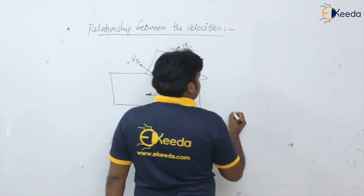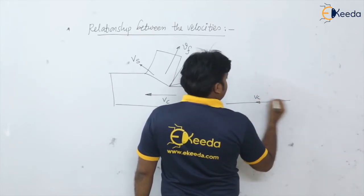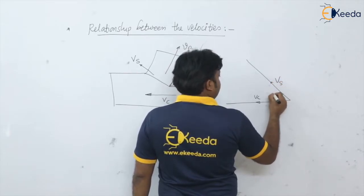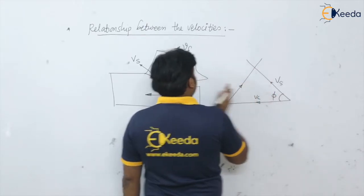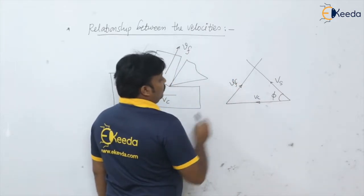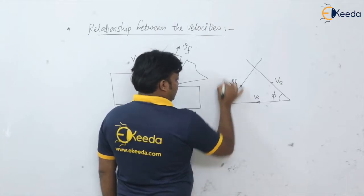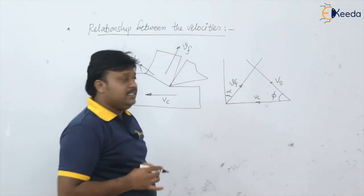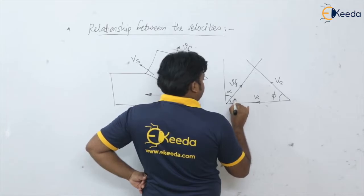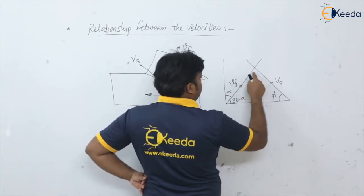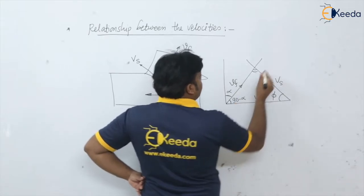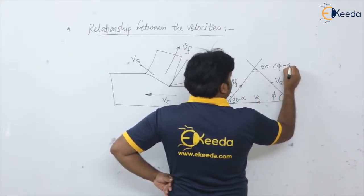If you plot the triangle for these three velocities — this is our cutting velocity. With the shear angle φ we have the shear velocity. The chip is moving along the rake face of the tool with the chip velocity or flow velocity Vf. If the rake angle is α, then this angle is 90 minus α, and this angle will be 180 minus 90 minus α minus φ, that is 90 minus φ minus α.